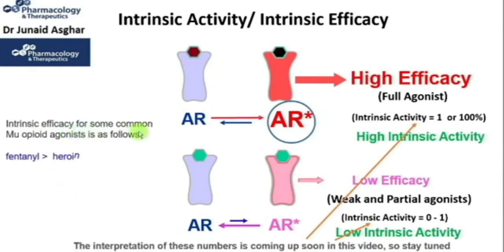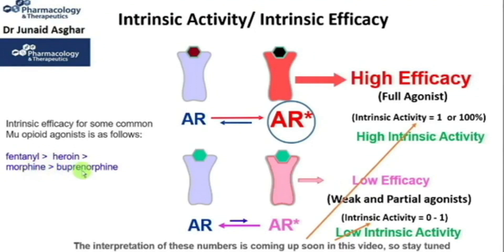Let me show you the intrinsic efficacy of some common mu opioid agonists. Fentanyl possesses the highest intrinsic efficacy compared to heroin, morphine, and buprenorphine. Fentanyl, heroin, and morphine are all full agonists, whereas buprenorphine is a partial agonist at the mu opioid receptor, and thus a weaker analgesic than fentanyl, heroin, and morphine.